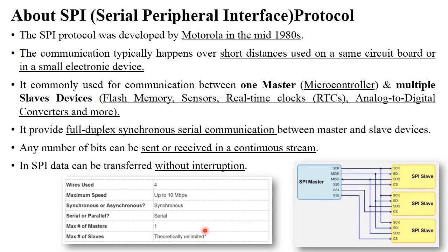In SPI protocol, there are four wires used between master and slave devices. Maximum speed of data transfer is up to 10 Mbps. This is a synchronous protocol because they use clock signals while transmitting data. They send data in serial mode, and for communication purpose, there is only one master and multiple slave devices. In this image, there is one SPI master and multiple slave devices, all placed on the same circuit board or in small electronics devices.